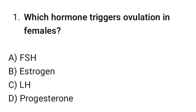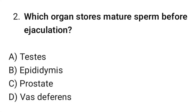Question No. 1: Which hormone triggers ovulation in females? The correct option is C. LH. Question No. 2: Which organ stores mature sperm before ejaculation? The correct option is B. Epididymis.